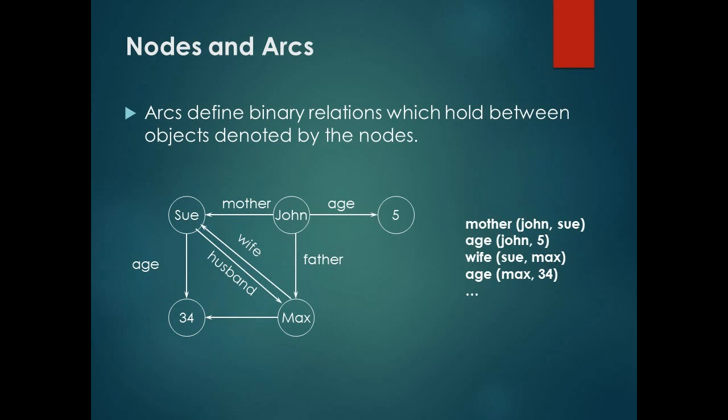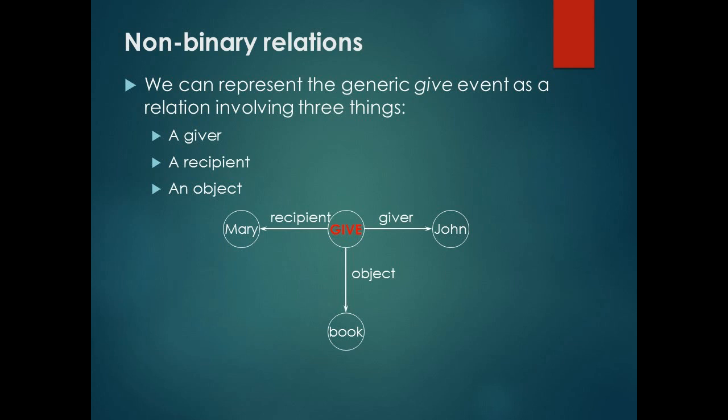Non-binary relations. We can represent the genetic given event as the relation involving three things: a giver, a recipient, and an object. An example for Give: here Mary is the recipient and John is the giver and the object is book.